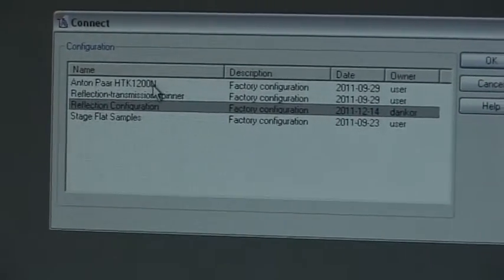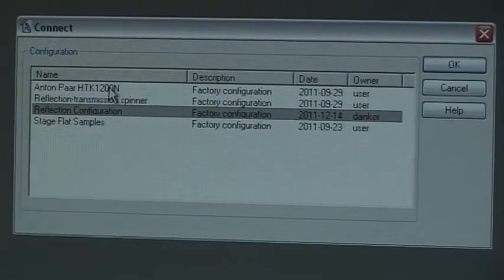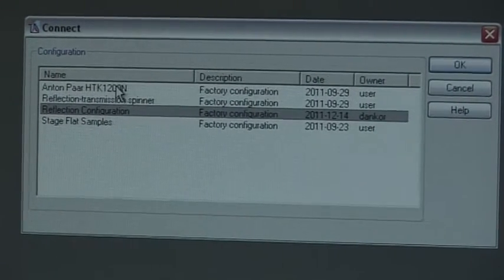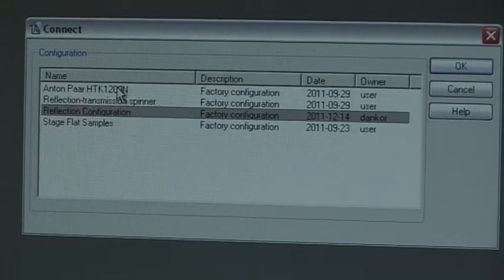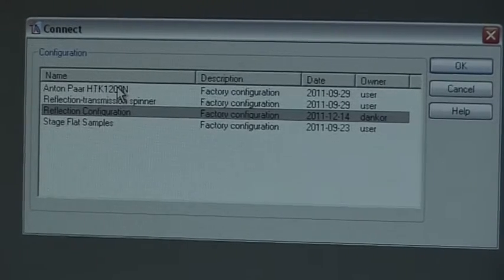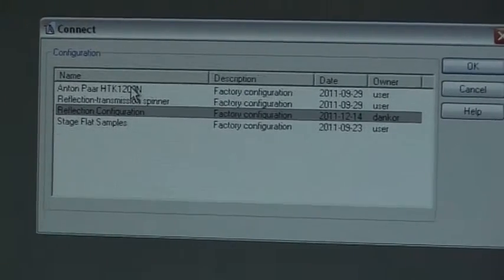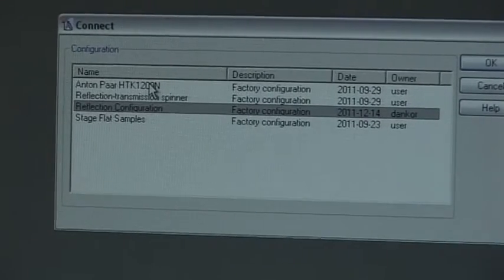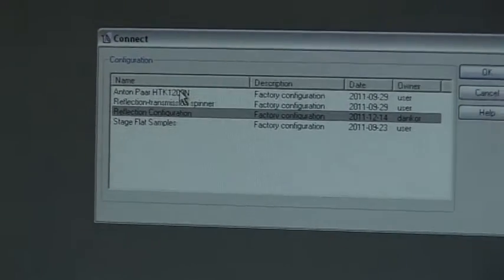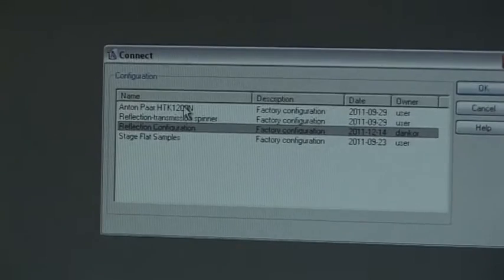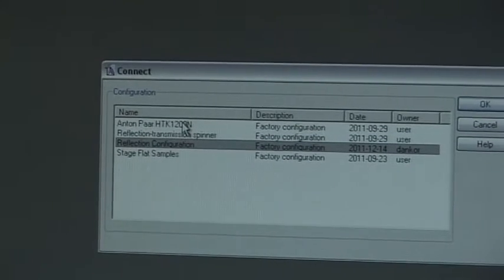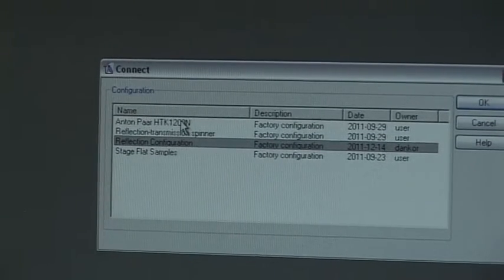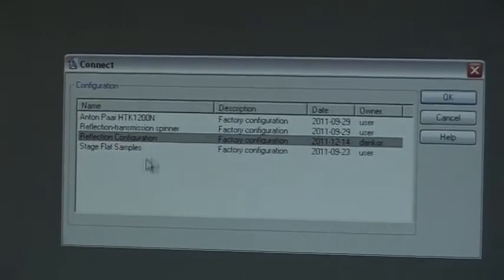We can also use a furnace as a sample stage. If you want to study X-ray at a different temperature, sometimes it's very important to get the knowledge about expansion or changing of the unit cell. You can put it inside the furnace and then start heating it, and then the machine will take the data every now and then. But for now we use the standard reflection configuration sample stage.